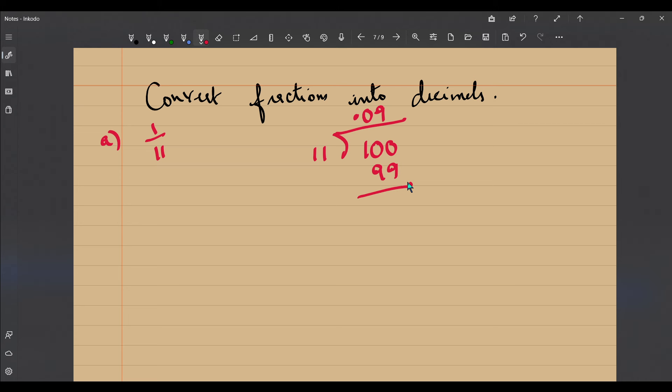So once again you have 1 as a remainder and actually the same process is going to continue. Let us do just 1 for our satisfaction, so adding a 0 and one more 0 also.